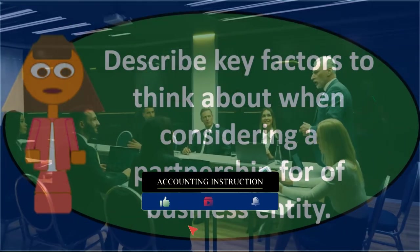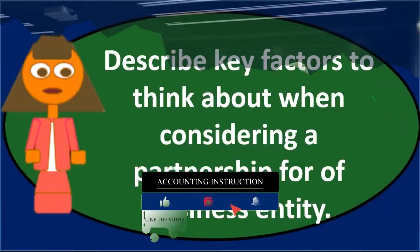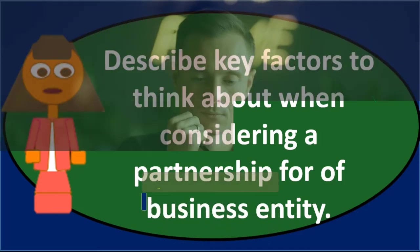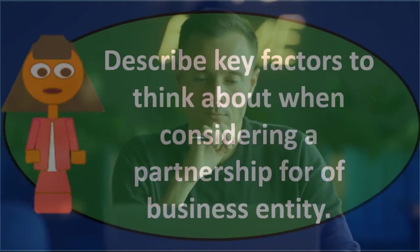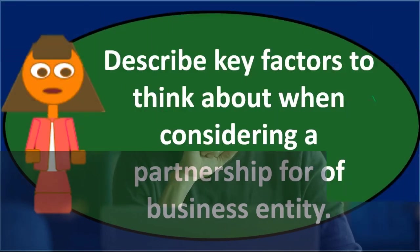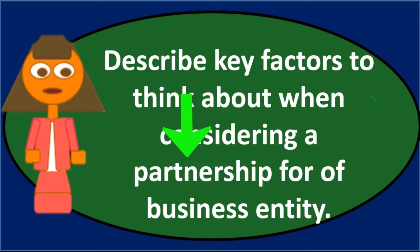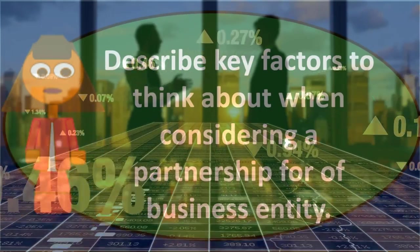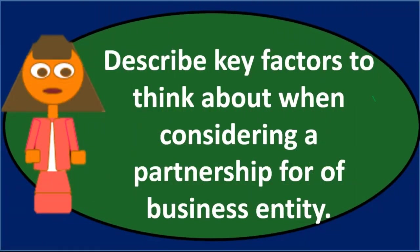Another option is a limited liability partnership, where you have an investor-type partner who isn't actively involved — this can be a way to generate capital. So a third possibility for that individual owner thinking about expanding is to bring in a limited partner: someone not actively involved in the business but who holds an equity share in the profits. That limited partner then has more liability protection.